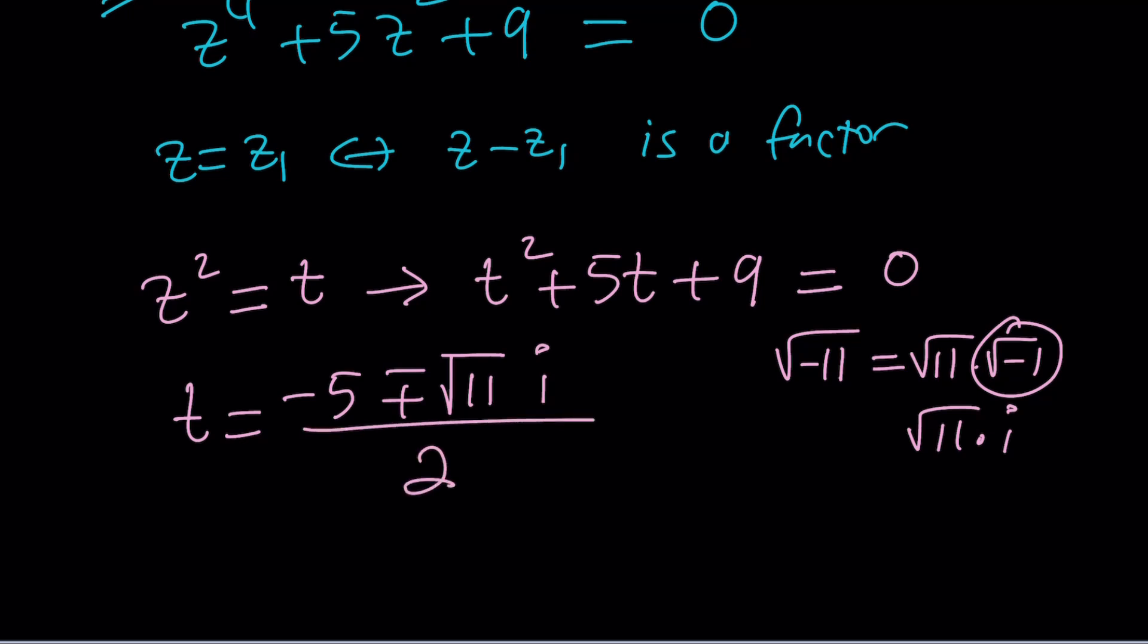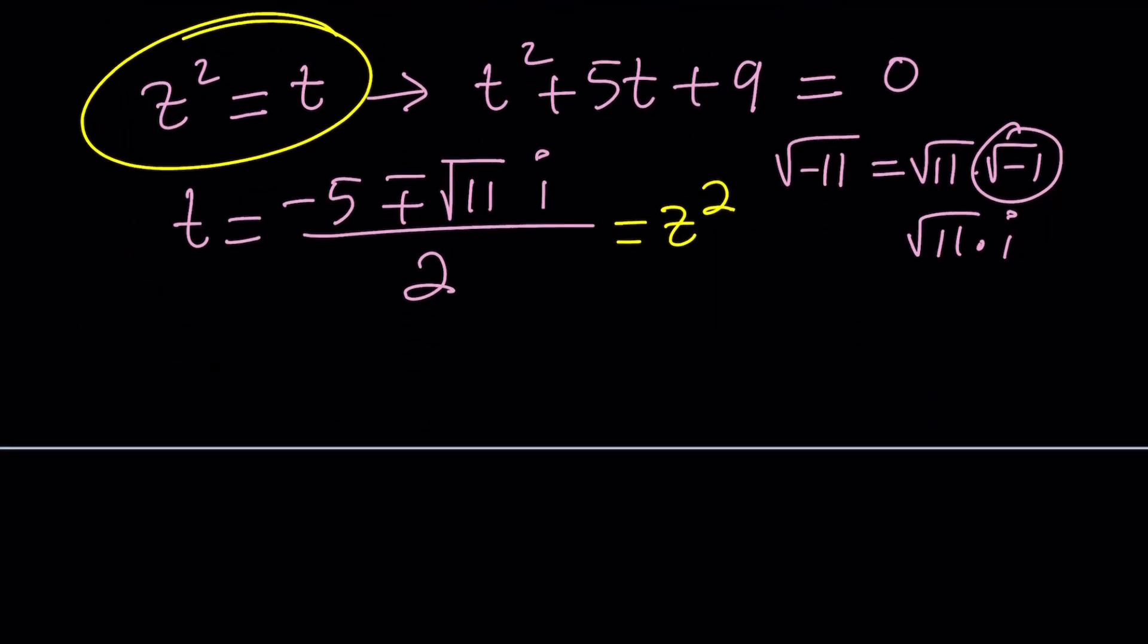We got the t values, but we're looking for z values. t equals z squared, so we're going to be solving two separate equations, because z squared equals two different things. Let's start with the plus sign. z squared equals negative 5 plus root 11i divided by 2.